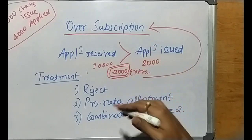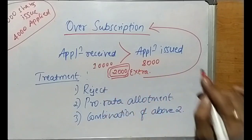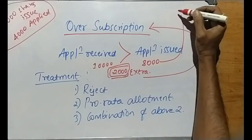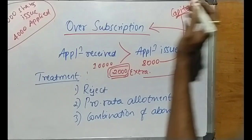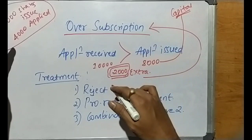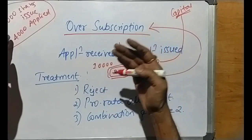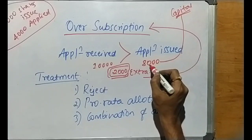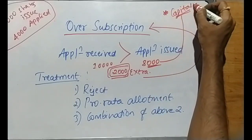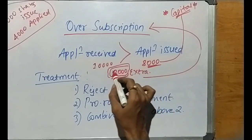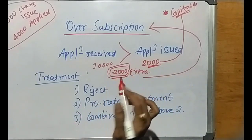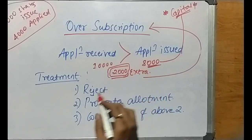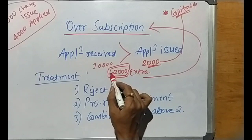So what is the accounting treatment for these 2,000 extra applications? Remember, the company cannot issue extra shares beyond its authorized capital. Under-subscription is different — there applications received were 4,000, so capital would be accordingly less. But in over-subscription, the company cannot issue extra shares. So with these 2,000 extra shares, the first treatment option is complete rejection — the 2,000 shares are completely rejected.